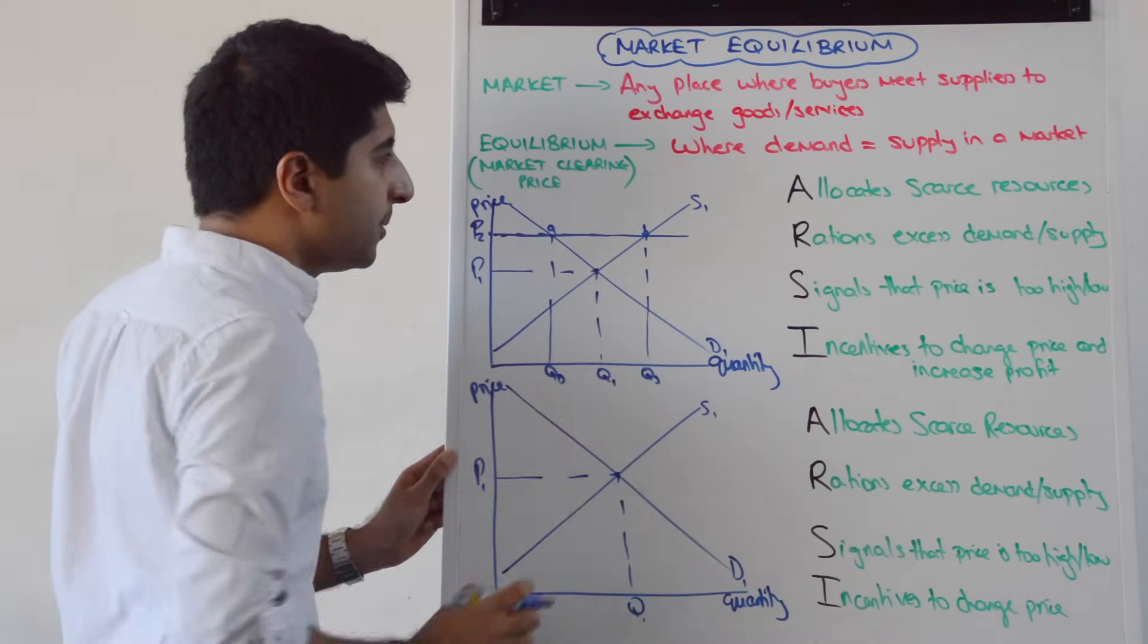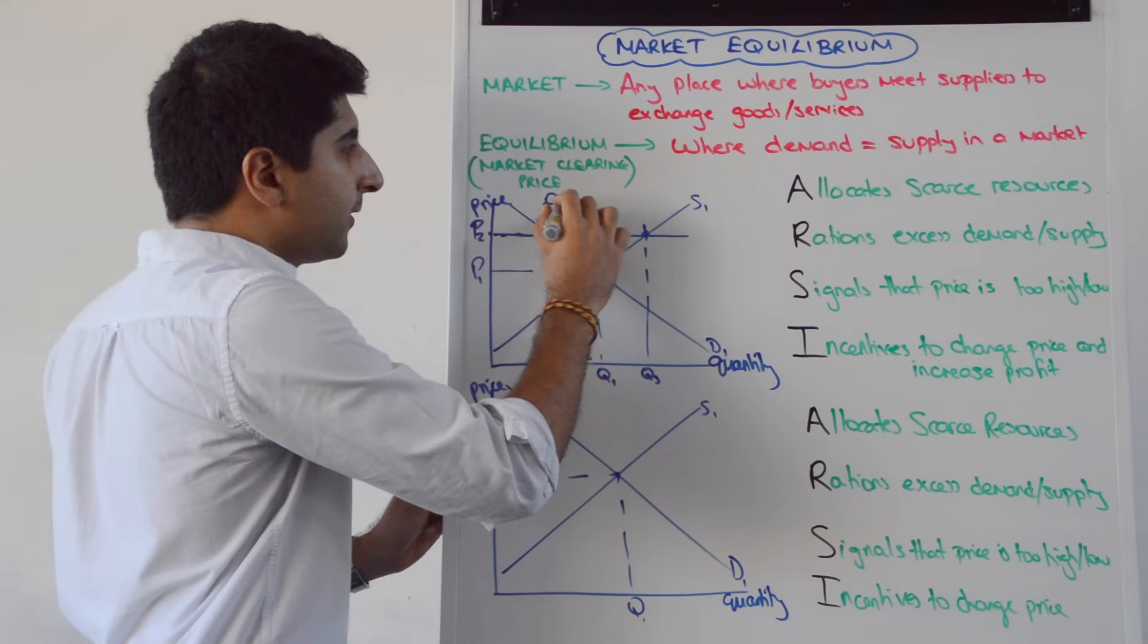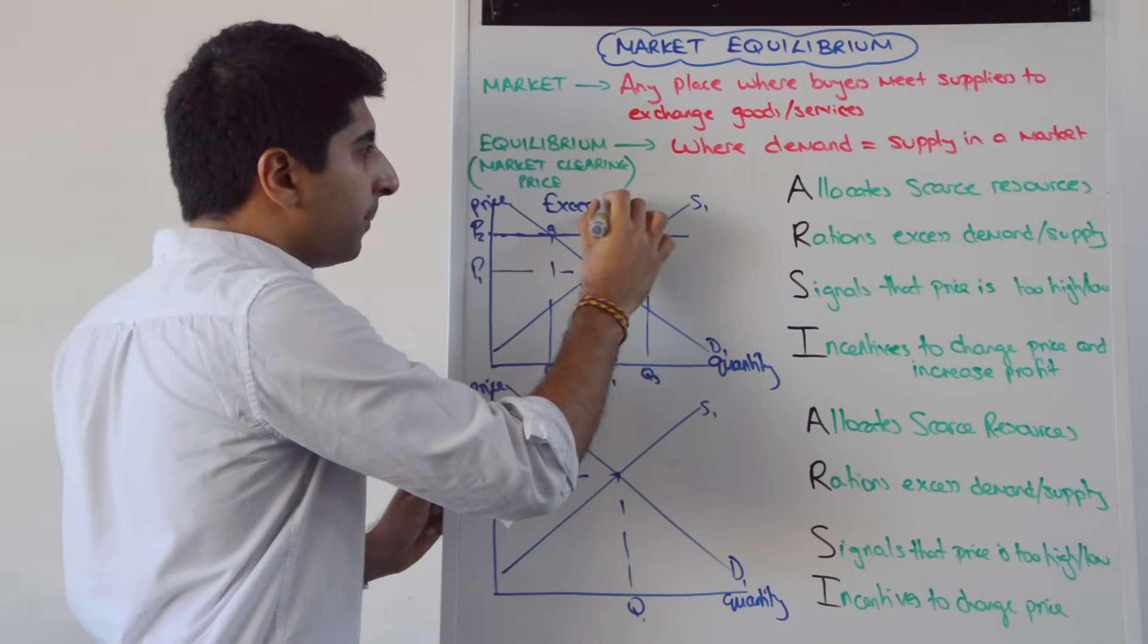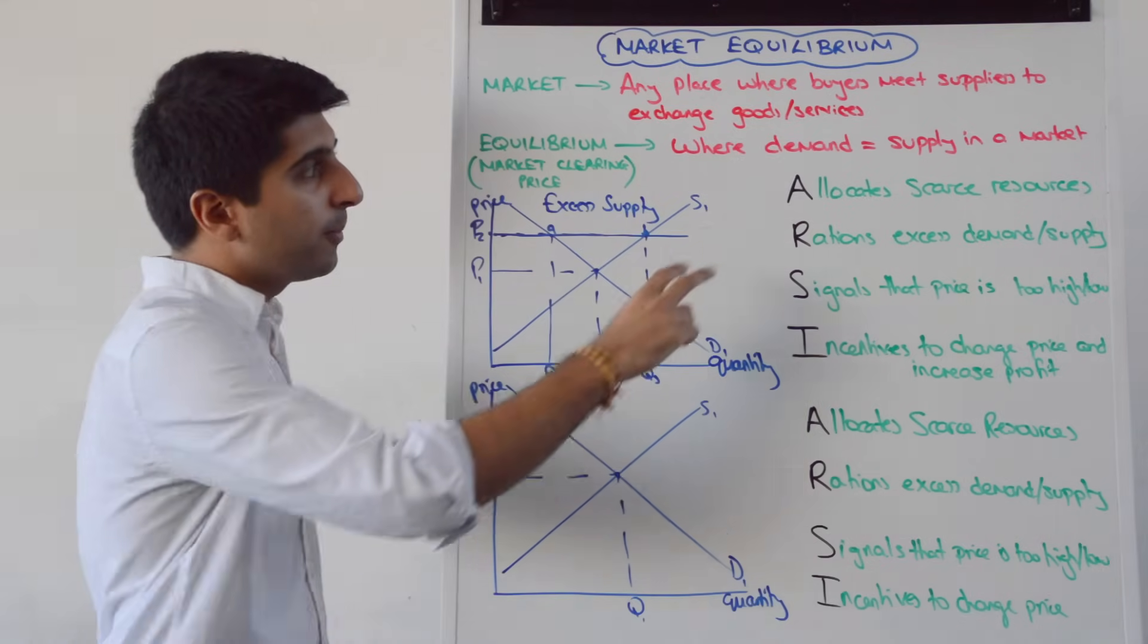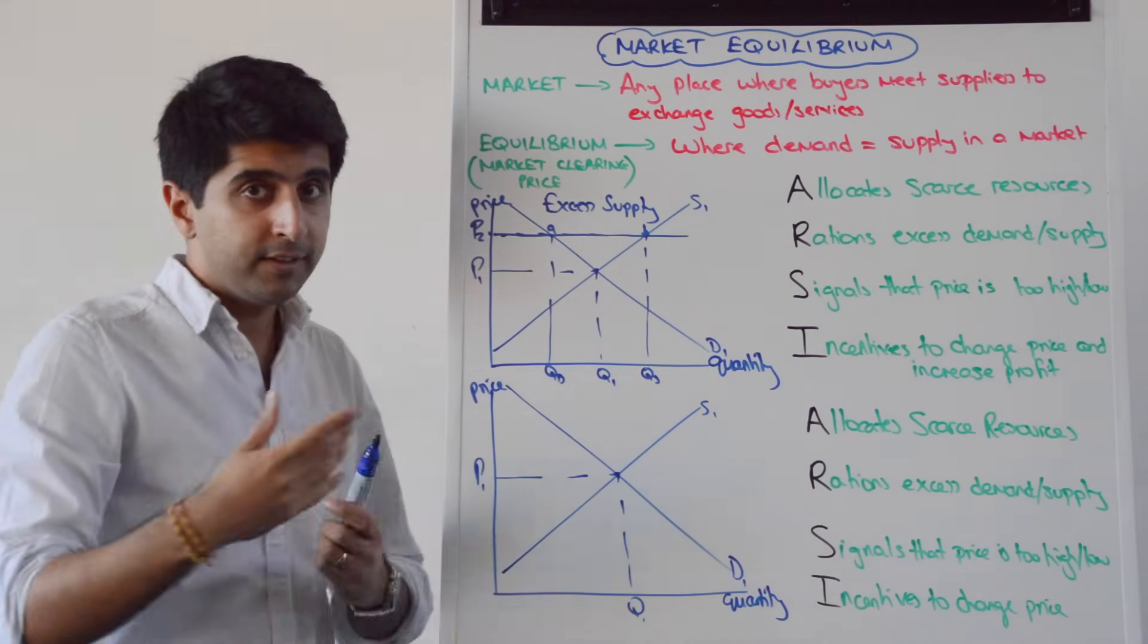The distance between AB is excess supply. So supply is clearly much more than demand. Well that's not equilibrium because equilibrium is relatively equal. So this is disequilibrium.